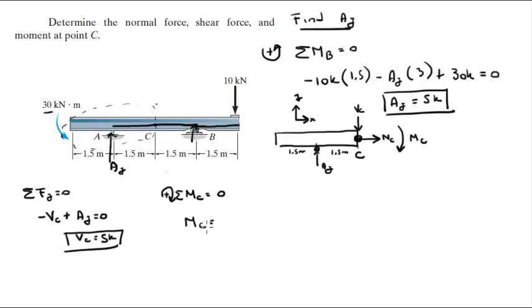The moment created by AY, and remember we have these 30 kilonewton meter moment right here. It's still on the section, still inside the section that we got. So it's AY times 1.5 because it's the distance from C to AY, minus the 30 kilonewton meter moment that is being applied right here, and all of that is equal to zero.